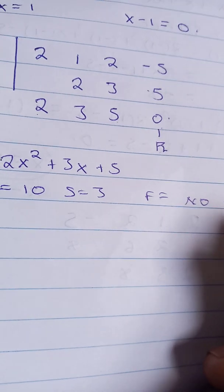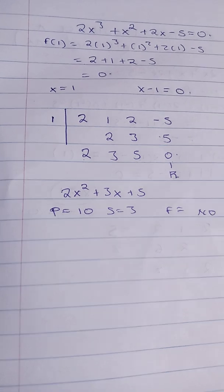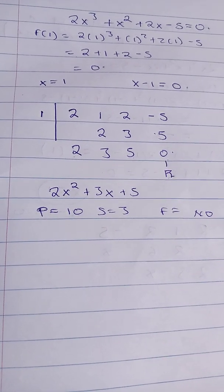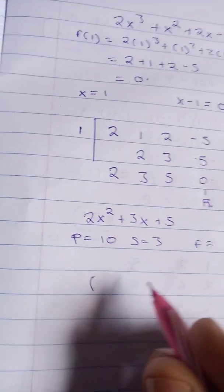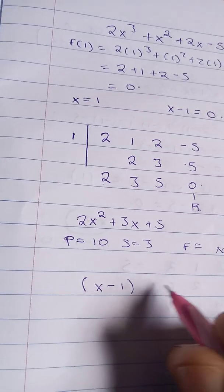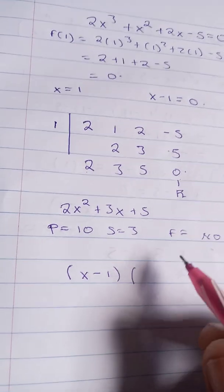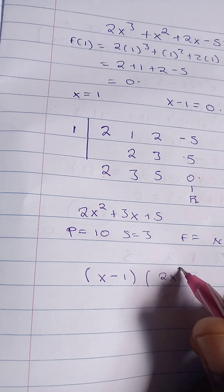It has got no factors. So if it doesn't have factors, if the question was asking you to factorize it, the answer, your final answer, would be: the first factor we determined was x - 1, then you indicate that function as well in the brackets.